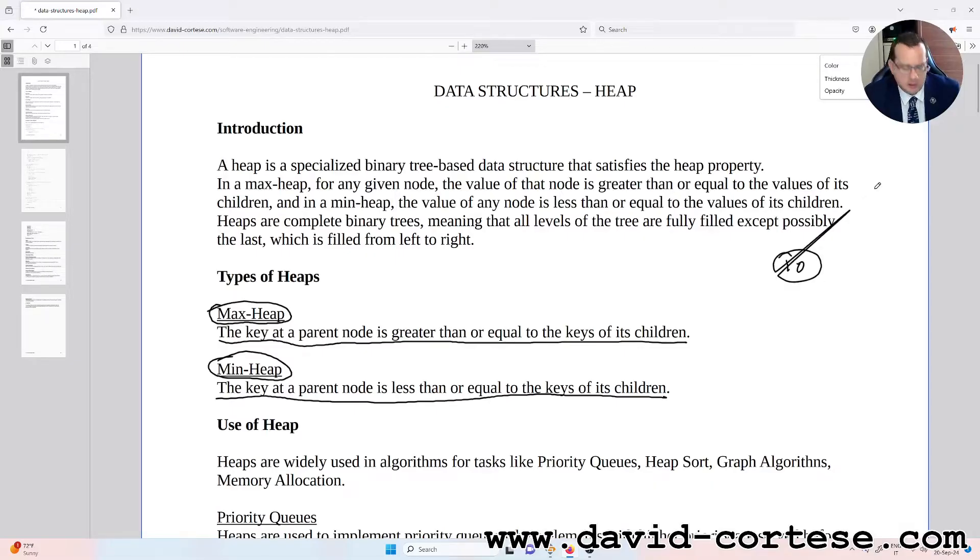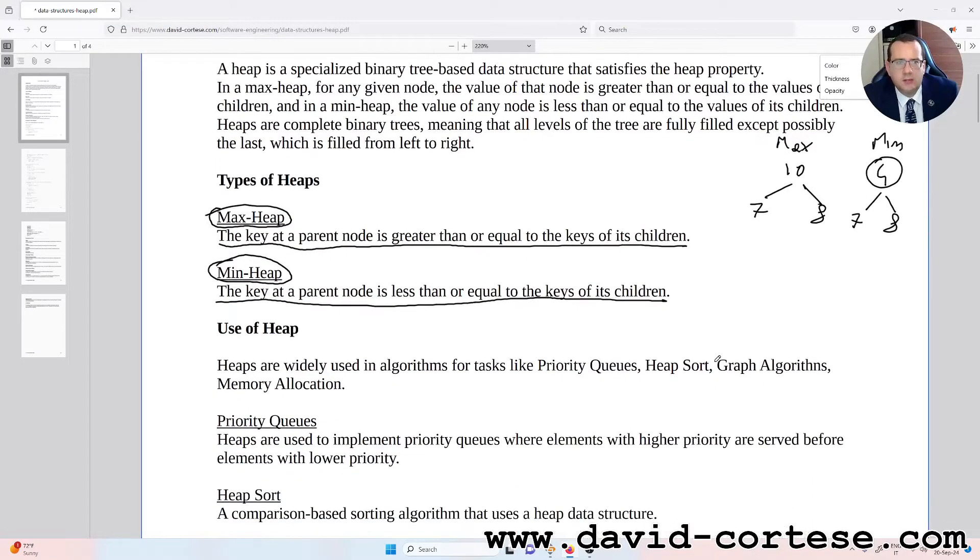In a max heap, you find for example 10 with two children that are 7 and 8. In a min heap, you find 4 as parent and then 7 and 8. Max heap: the key at a parent node is greater than or equal to the keys of its children. Min heap: the key at a parent node is less than or equal to the keys of its children.